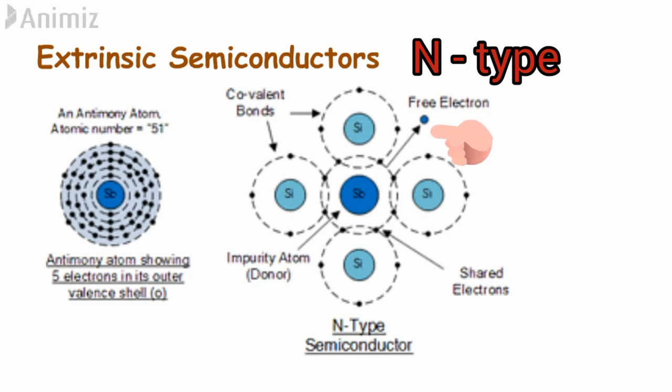So here the electrons that are left behind increase the conductivity of the lattice. And since the electrons are donated to the lattice by this antimony, these are known as donors. And also as the negatively charged electrons are introduced to the lattice as the charge carriers, these semiconductors are known as the n-type semiconductors. So let's learn the next part in the next session.